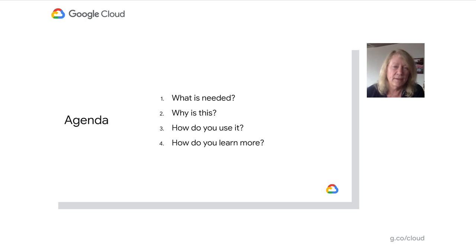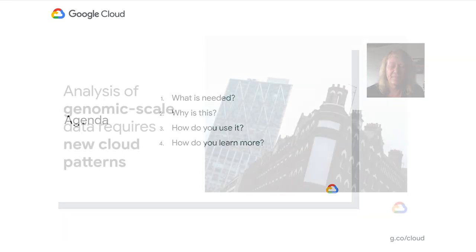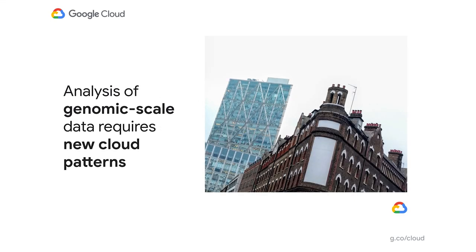There are four parts: what is needed in this area, why do we need to have patterns and how do you learn them, how are you going to use pattern information, and how can you learn more? First, we need to understand the scale and scope of the problem.